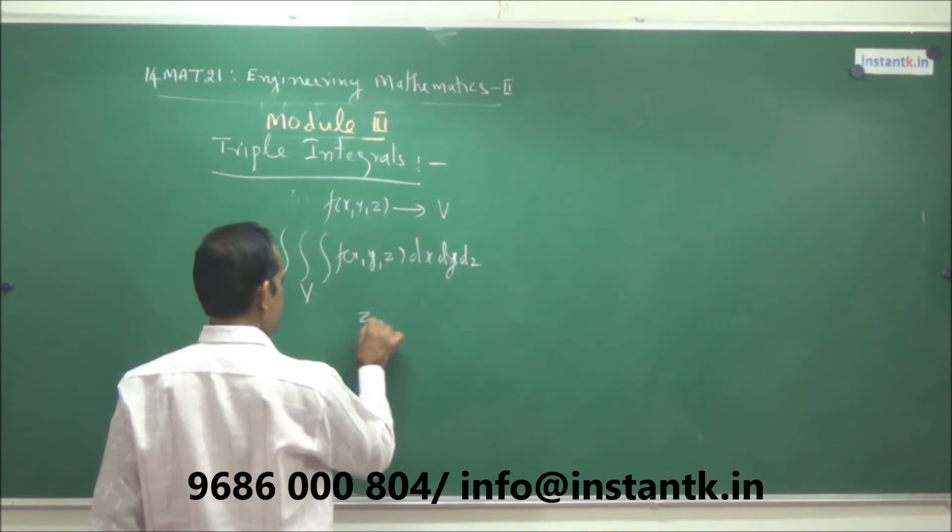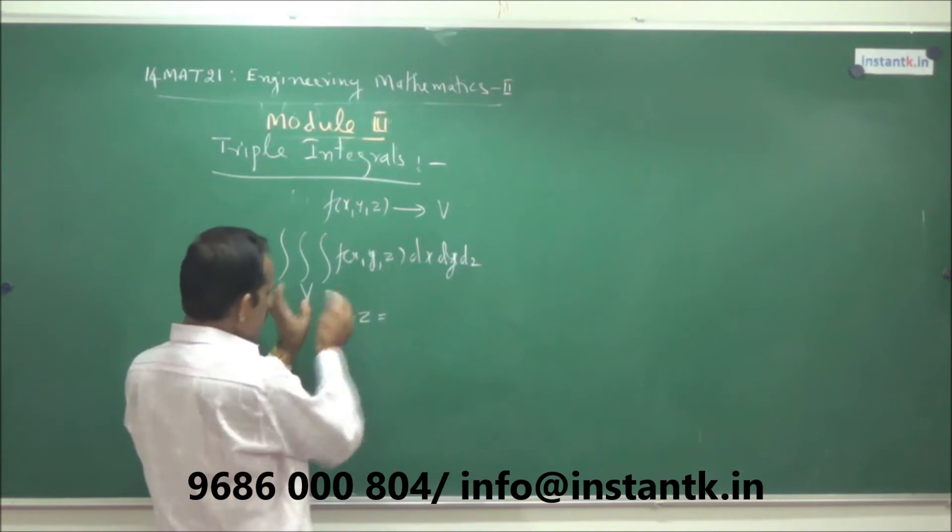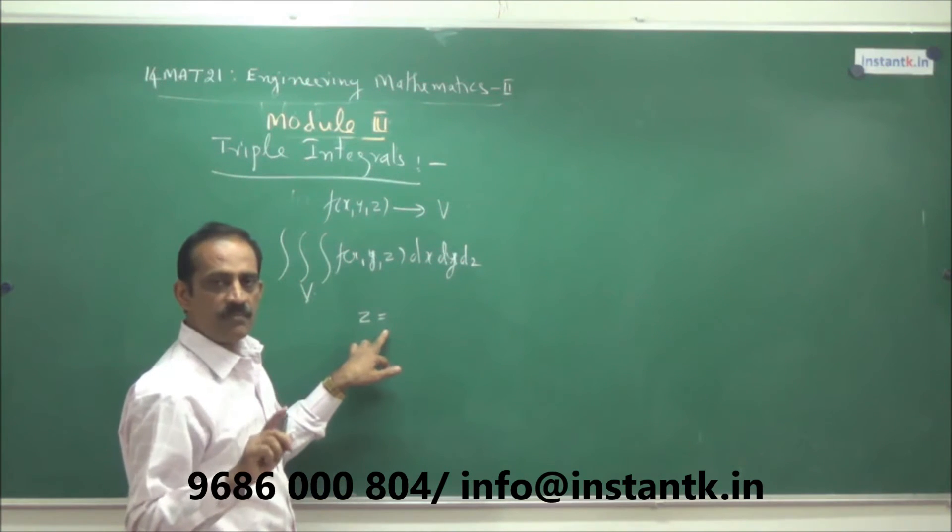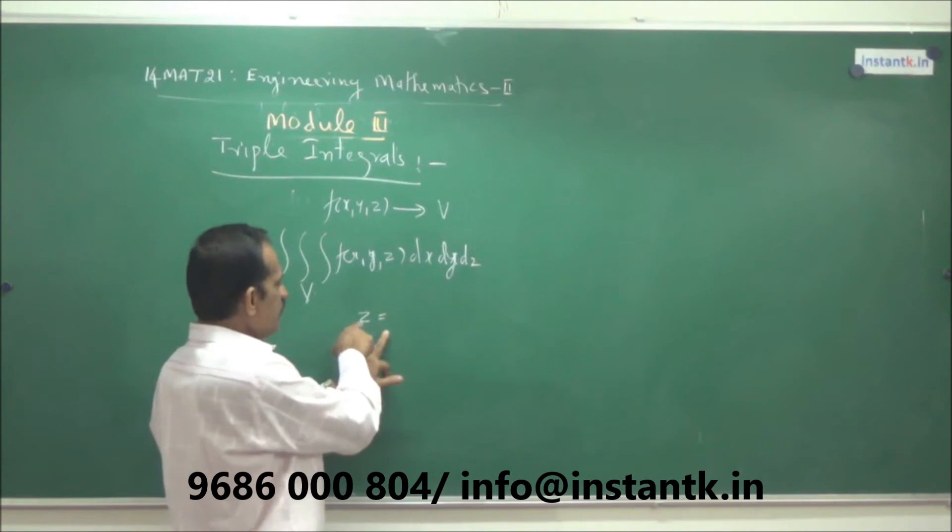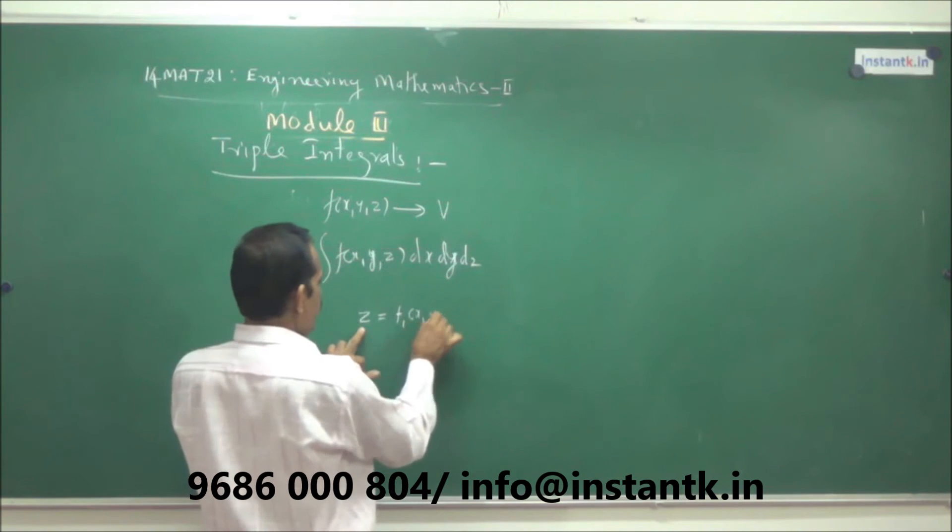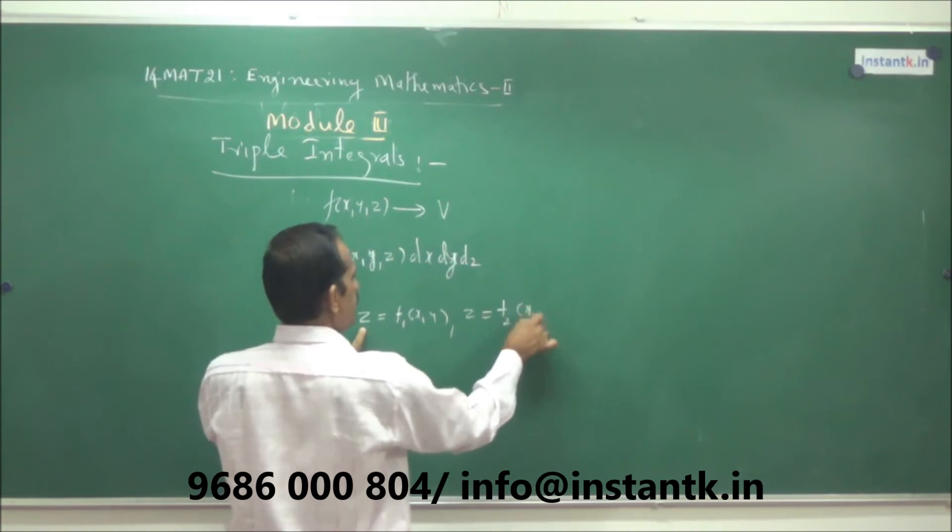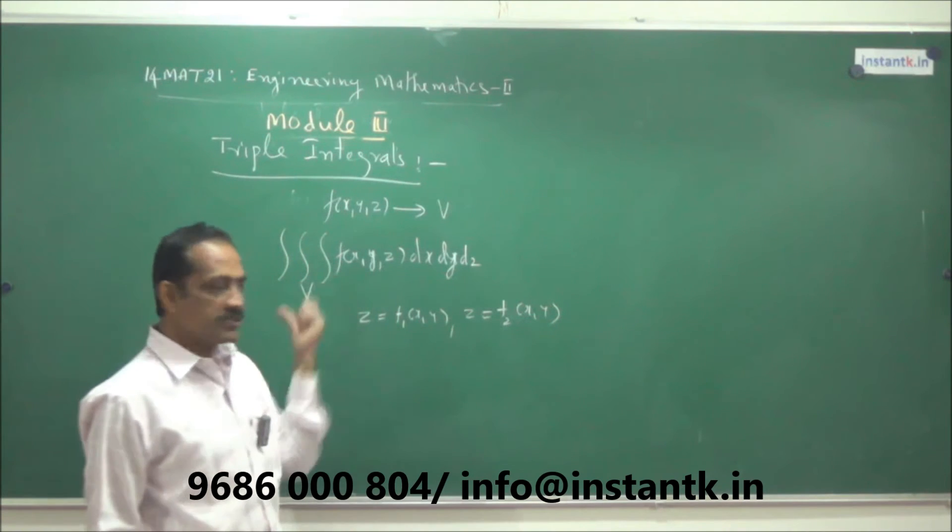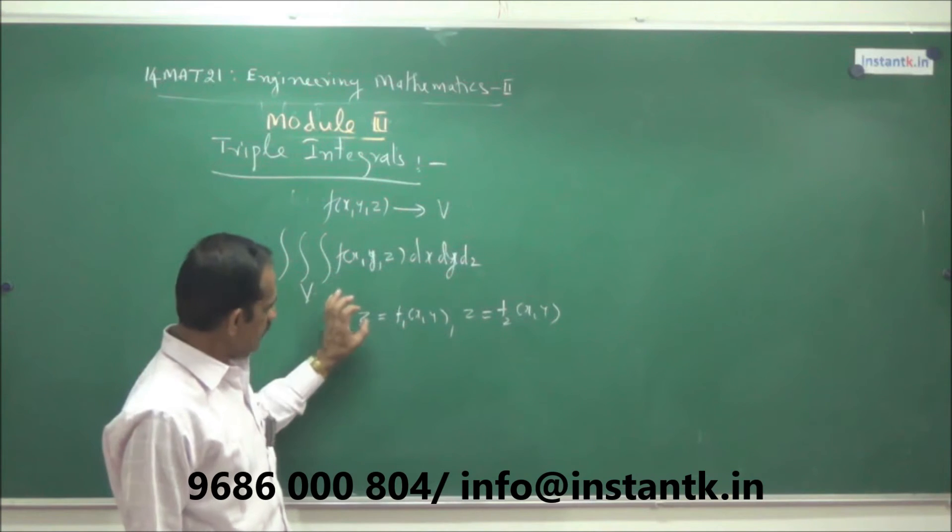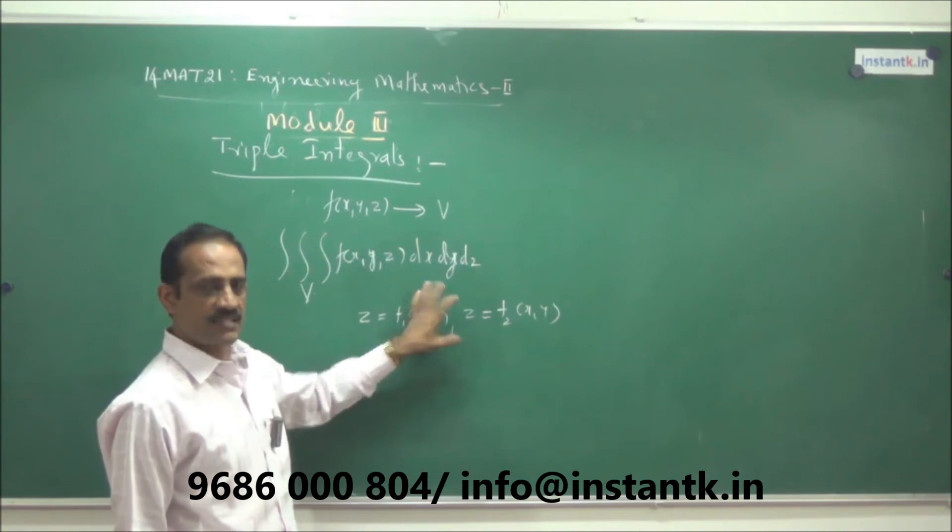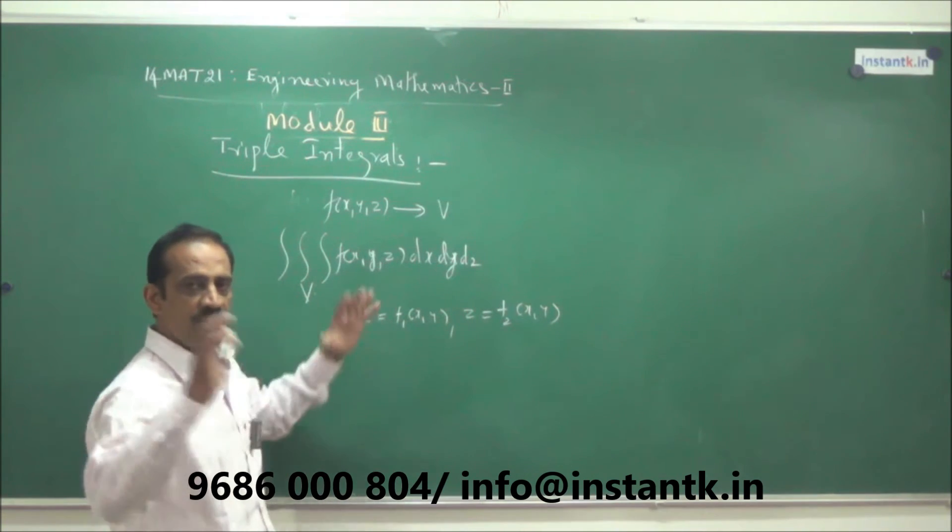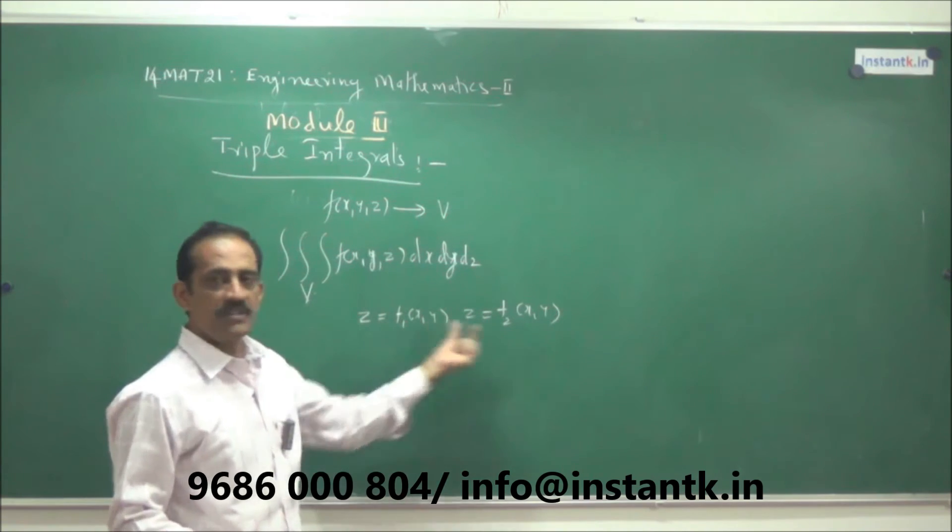If this region is a function of three variables, one possibility is that one of the variables, there are three variables, say x, y, z. First, one of the variables, say z, can be expressed as z is equal to some function of x and y and z is equal to some other function of x and y. So among these three variables, select one, it need not be z, it may be x, it may be y. If you select z, write z in terms of x and y, like this, z is equal to f1 of x, y to z is equal to f of x, y. That means, we get two surfaces, z is between these two.